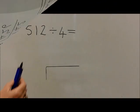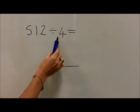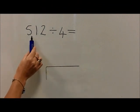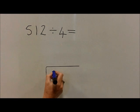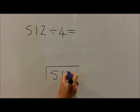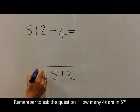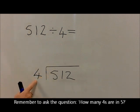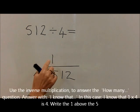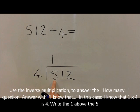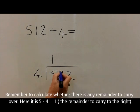With the question 512 divided by 4, we write the 512 underneath the bridge or bus stop, and the divide by 4 to the left of the bridge. We now ask the question how many 4's are in 5. Children should know that 1 times 4 is 4. Because we've got 5, we do 5 take away 4 and have 1 left over to carry.